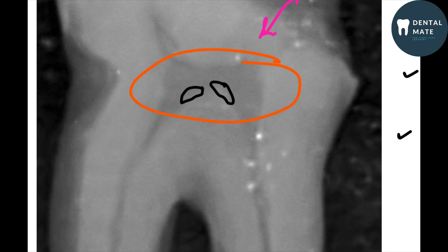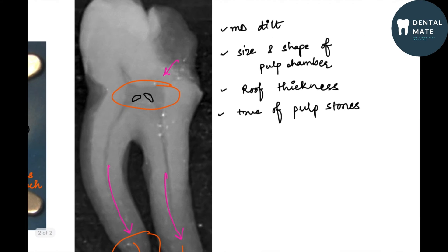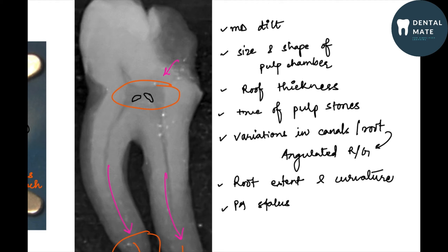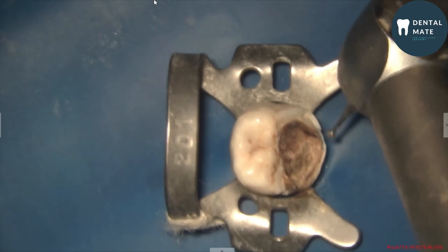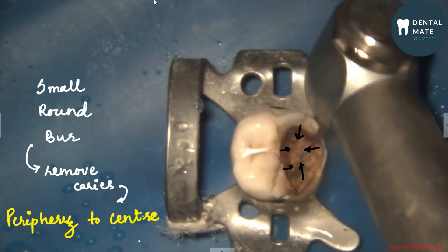If we carefully look at the floor, we can see certain ragged borders which indicate the presence of pulp stones. There are also variations in the canals of the root, for which we have to take an angulated radiograph. We can also see the extent and curvature of the root and the periapical status of the patient.